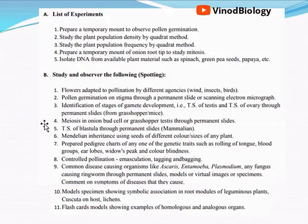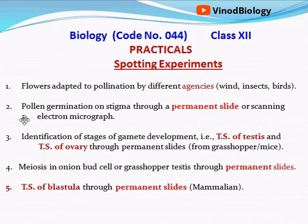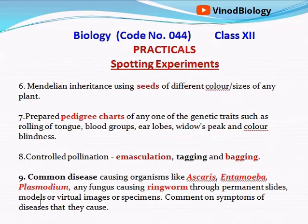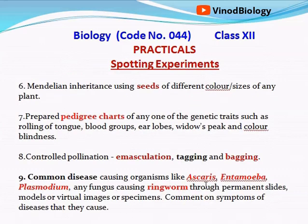The remaining are spottings — there are 11 in total and any 7 will be selected. The 11th spotting uses flashcards where you have to identify whether structures are homologous or analogous and give reasons. They will also give an image or a live sample of a microorganism or animal that you have to identify.